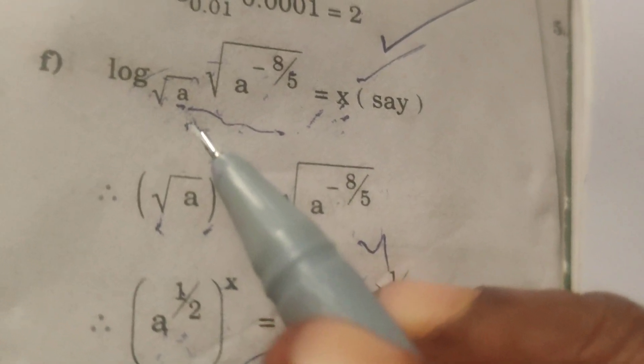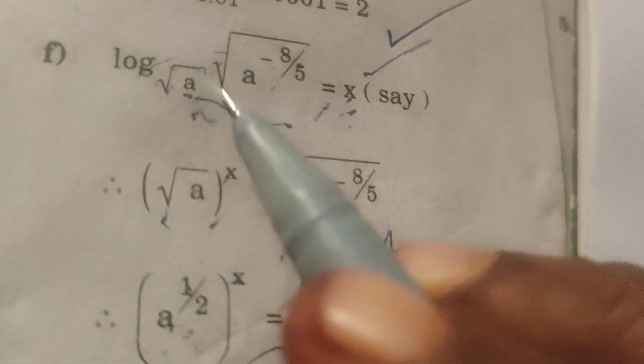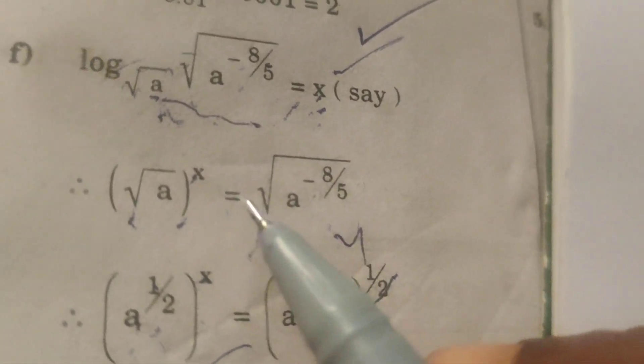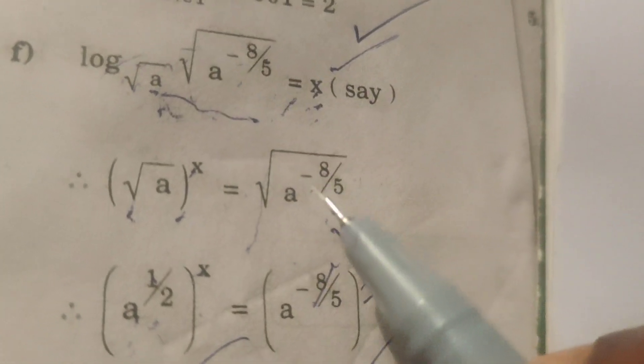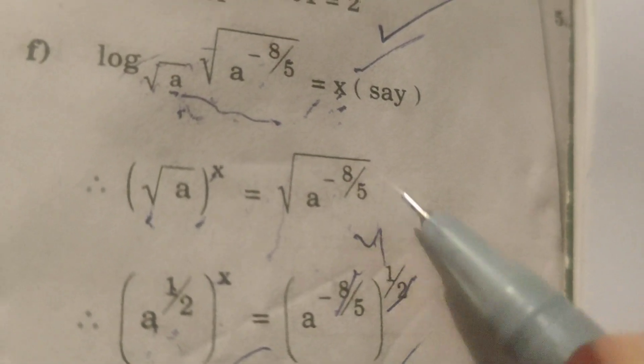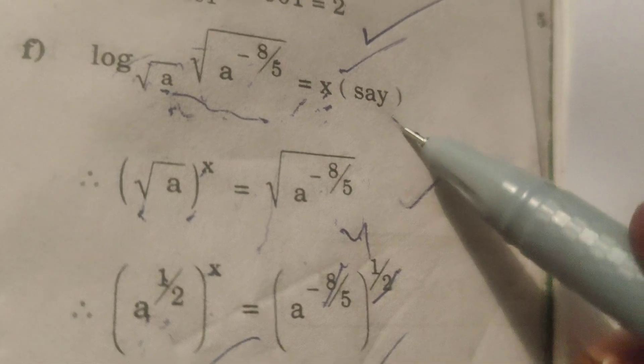Now write exponential form: root a power x equals to root a power minus 8 by 5. This is the exponential form. This is the logarithmic form.